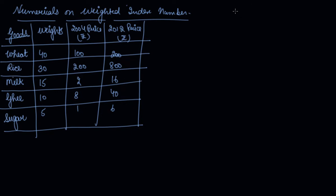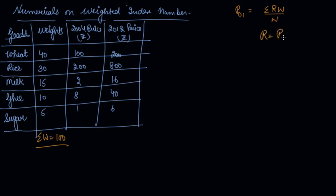For the weighted index number, the formula is sigma RW divided by W, where W is the weight. The sum of W we can find by simply adding up the weights, which is 100. We can also find R with the formula: price relative R equals P1 divided by P0 into 100.